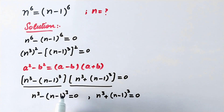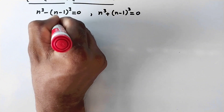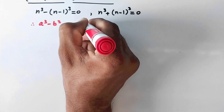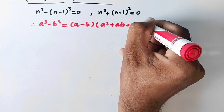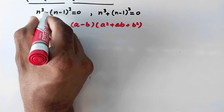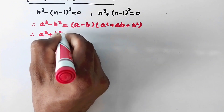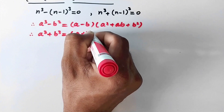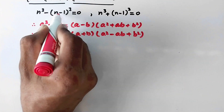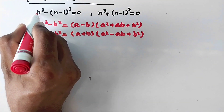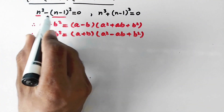We can also apply algebraic cube formulas. The difference of cubes: a cubed minus b cubed equals a minus b times a squared plus ab plus b squared. The sum of cubes: a cubed plus b cubed equals a plus b times a squared minus ab plus b squared. Here a equals n cubed and b equals n minus 1 to the whole power cube.